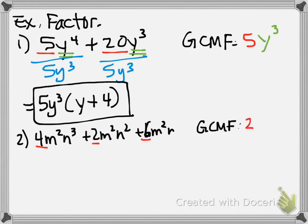And then let's look at m's. So we have m squared, m squared, m squared. What do they have in common? They have the m squared in common. And then let's look at n's. We have an n cubed, an n squared, and an n. So what do they have in common? N. Just one n. So what I'm going to do is divide each of these by that 2m squared n.